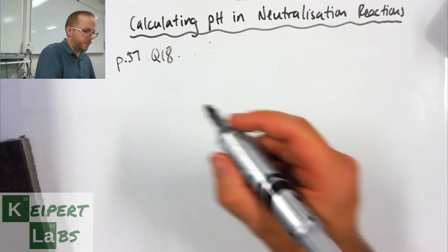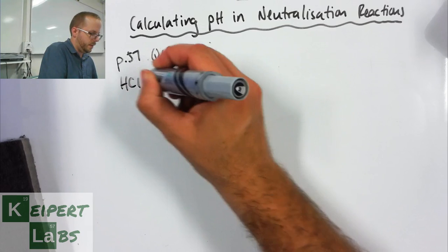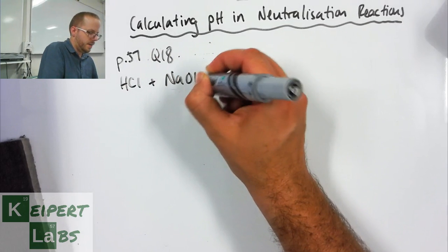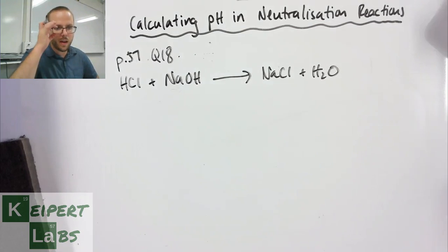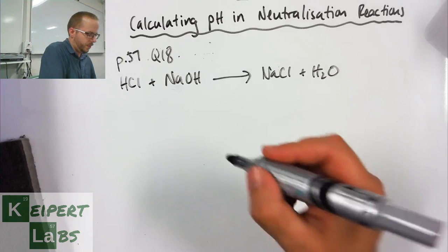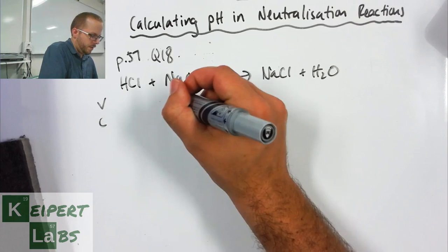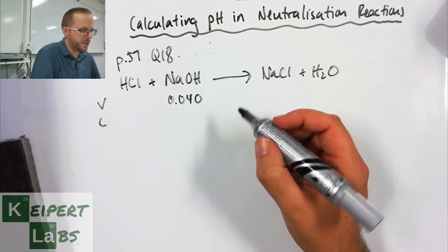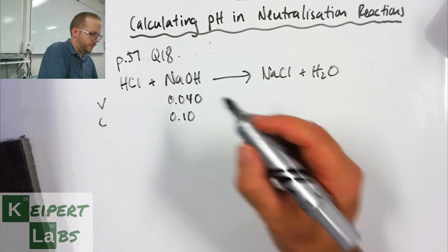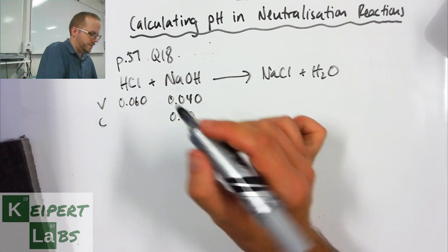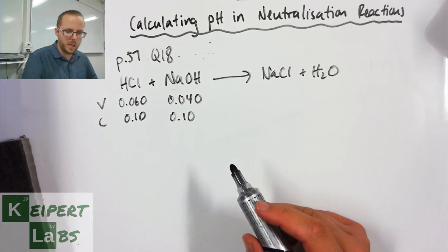So we're told we've got the same sort of reaction going on here: hydrochloric acid plus our sodium hydroxide forming sodium chloride and water. We've got 40 mL—converting that to litres—of 0.10 mole per litre sodium hydroxide combining with 60 mL of 0.10 mole per litre hydrochloric acid. So the same concentrations but different volumes initially.